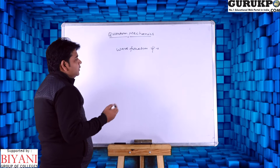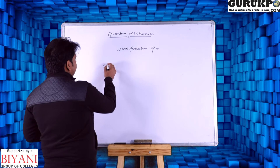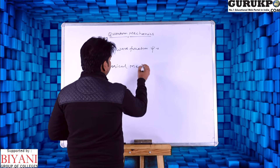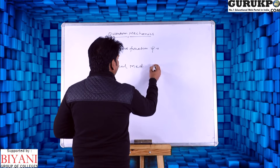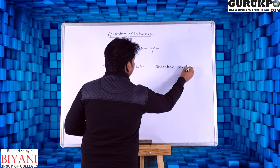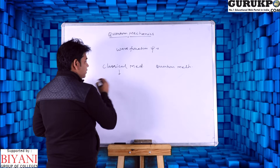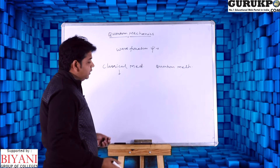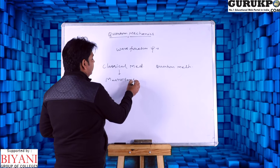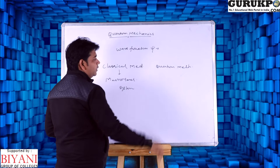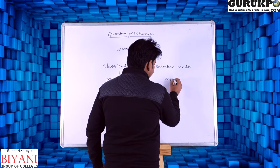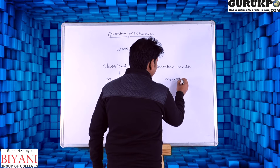We divide our mechanics into two categories: first, classical mechanics, and quantum mechanics. In classical mechanics, we study the macro level system. But in quantum mechanics, we consider the micro level system.